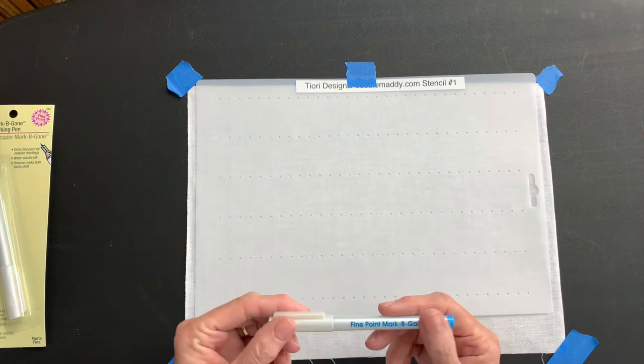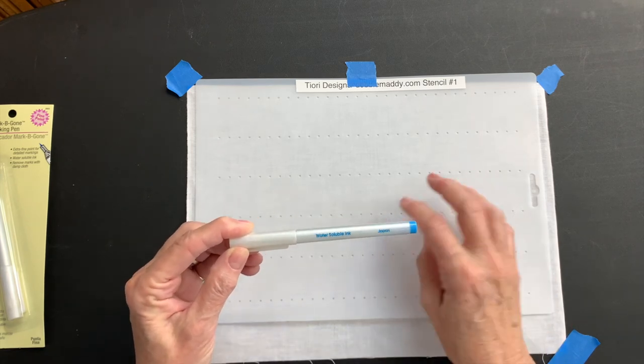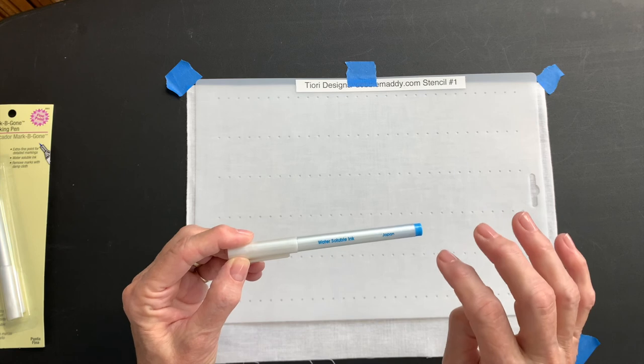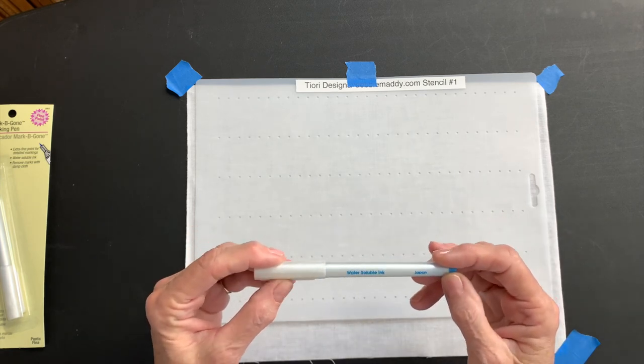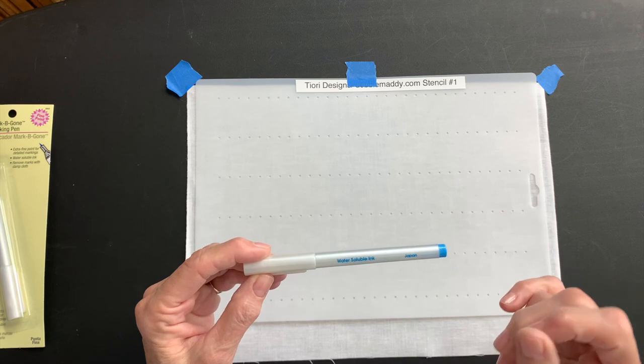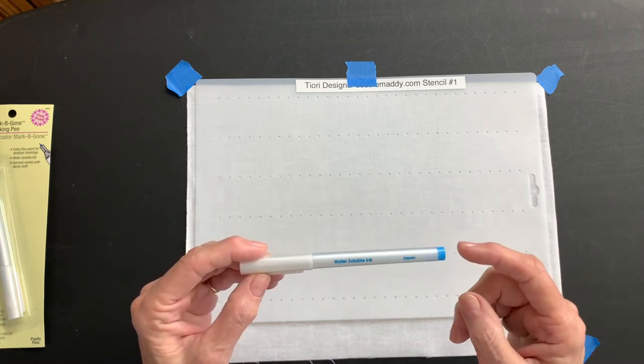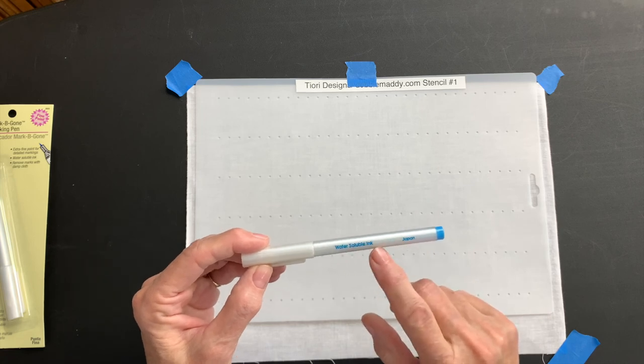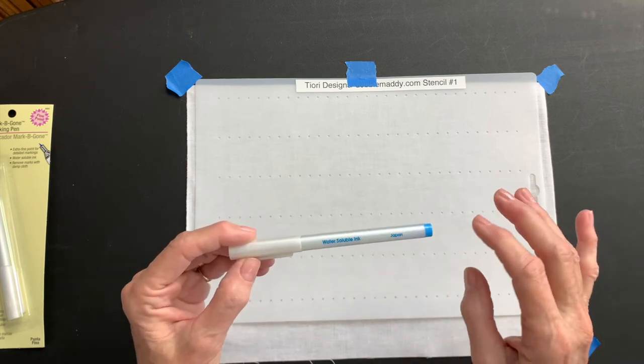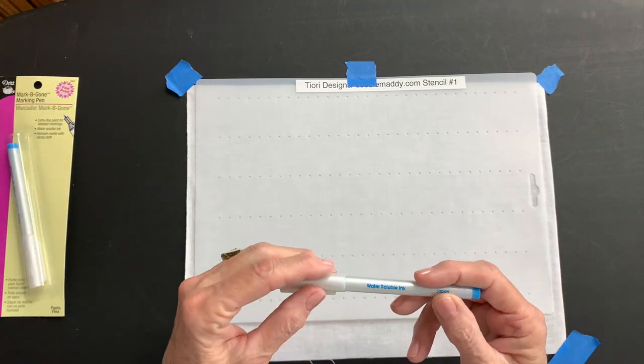Now, the pen that I'm going to use is a fine point water soluble pen. Now, you want to be sure whatever you're using to mark through these stencils to make your dots on the fabric, make sure that it is water soluble. You don't want to use anything that's permanent and you don't want to use anything that is air erasable. It's really sad to mark it with a pen that erases with the air and you don't get your stitching done before it starts to disappear. Now, this water soluble ink, when you put your fabric in to pre-soak it before you're dying, the cold water will make this ink disappear. This particular one is a mark be gone and it only has the water soluble.